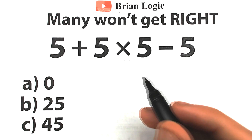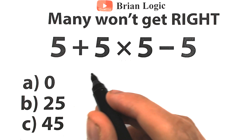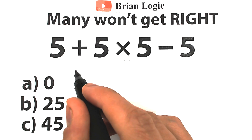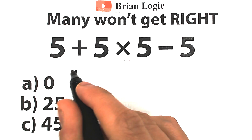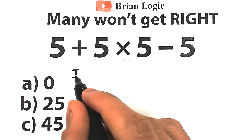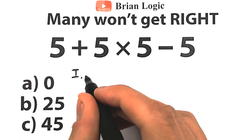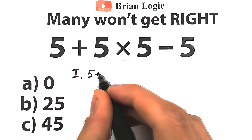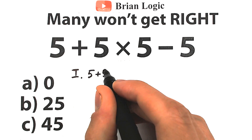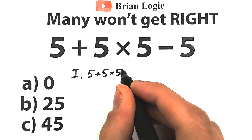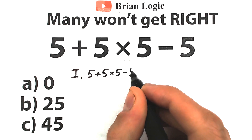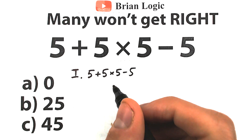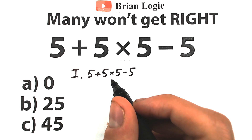So there are two types of people in the world. The first type of people solve this question like this. Let's look closely at what the first type of solution is. We have our challenge — this is like our first interpretation — so 5 plus 5 times 5 minus 5. Here's our challenge, and the first type of students solve this question like that.